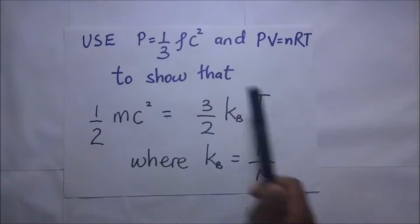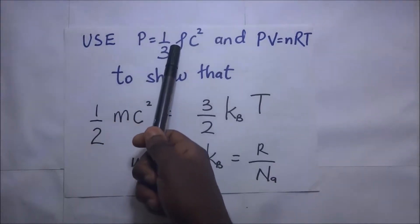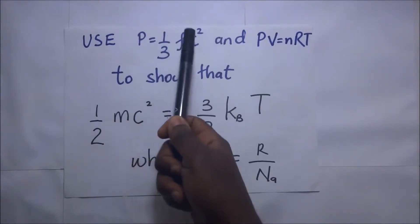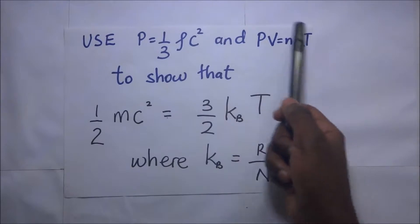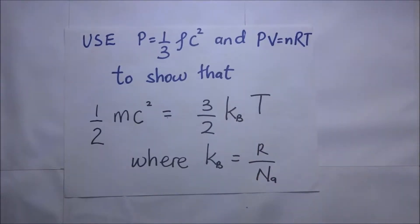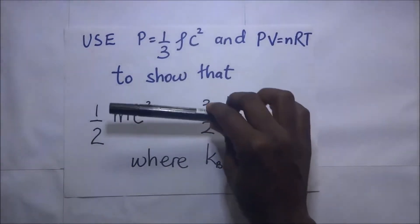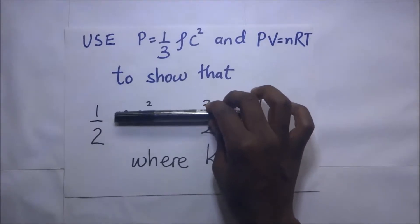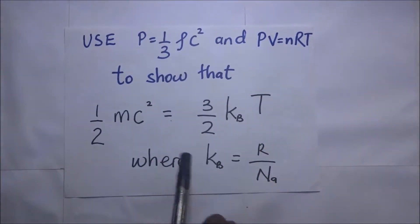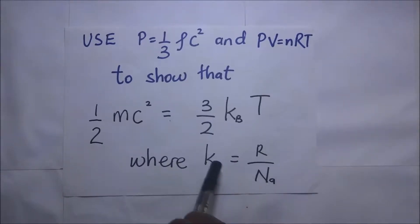The question requires me to use P = ⅓ρC², where ρ is density and C is the RMS speed, and the ideal gas equation PV = nRT. I'm going to use these two expressions to arrive at the conclusion. According to the question, K_B is equal to R over N_A.